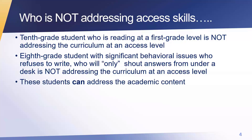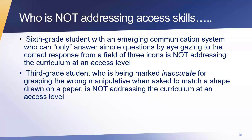The point is, these students can address academic content. So again, who's not addressing access skills? Here's a couple more. A sixth grade student with an emerging communication system who can only answer simple questions by using eye gaze to the correct response from a field of three icons is still not addressing the curriculum at an access skill level.